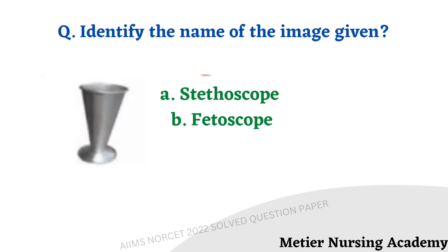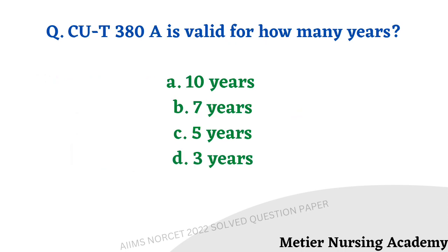Identify the name of the image given here. Options received: stethoscope and fetoscope. It is a direct and easy question, and the right answer is option B, fetoscope. Copper T 380A is valid for how many years? Options: 10 years, 7 years, 5 years, 3 years. The right answer is option A, 10 years.